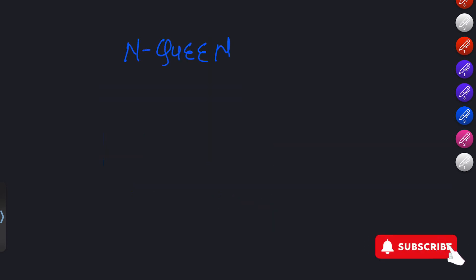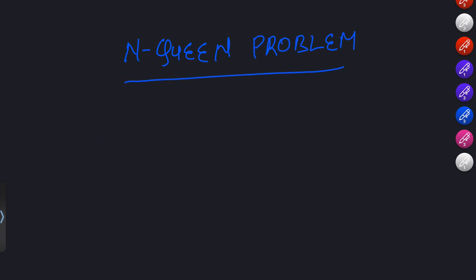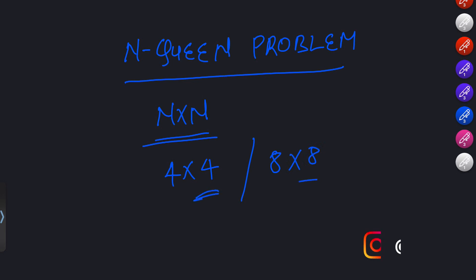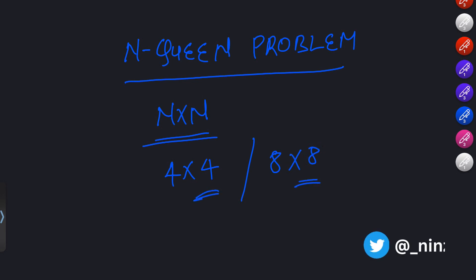To better understand backtracking, let's tackle a classic example: the N-Queens problem. In this challenge, we must place N queens on an N×N chessboard so that no two queens can attack each other. Queens can move horizontally, vertically, and diagonally.